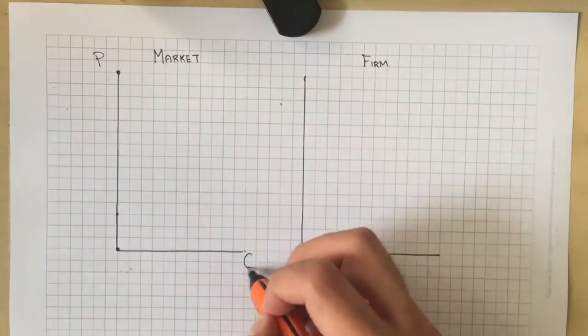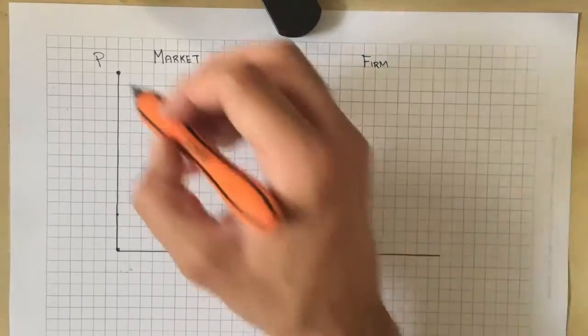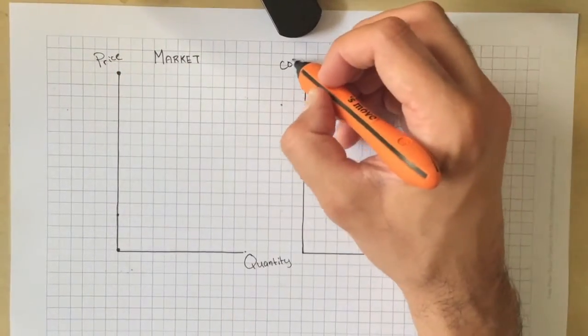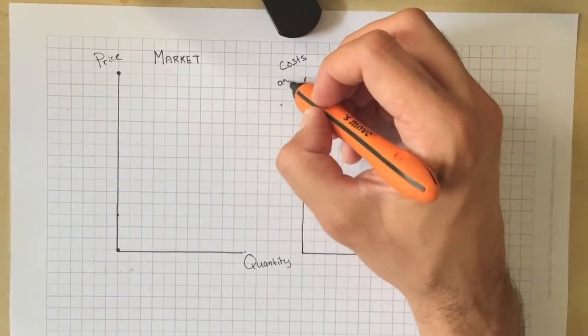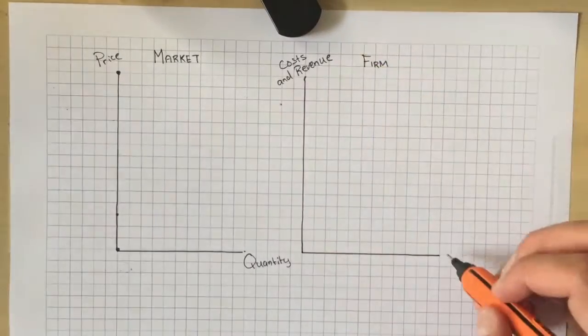Make sure to label your axes: price and quantity for the market diagram, and cost and revenue on the Y-axis and quantity on the X-axis for the firm diagram.